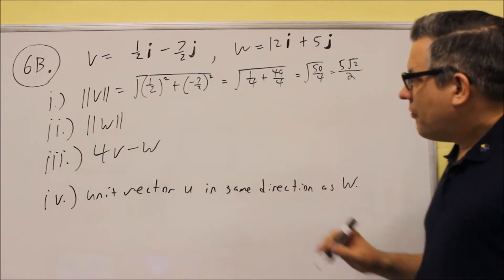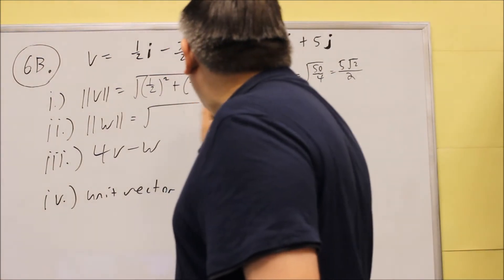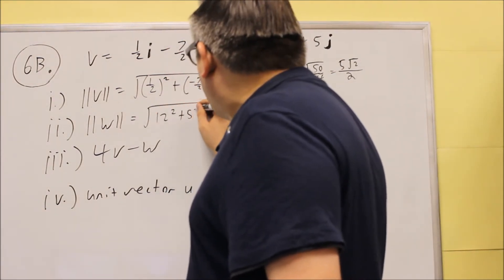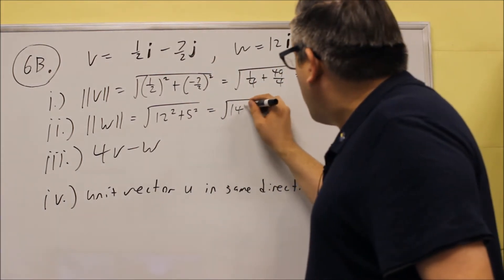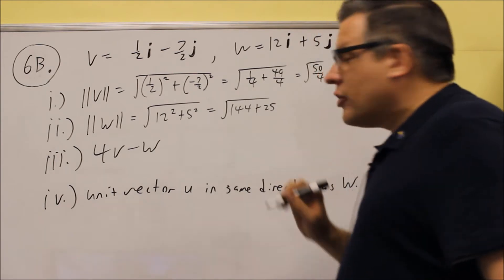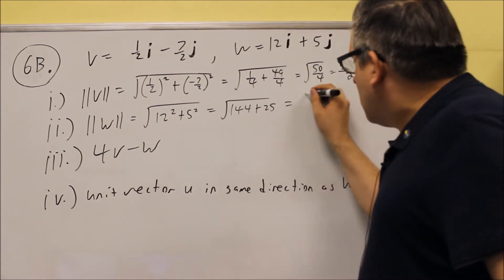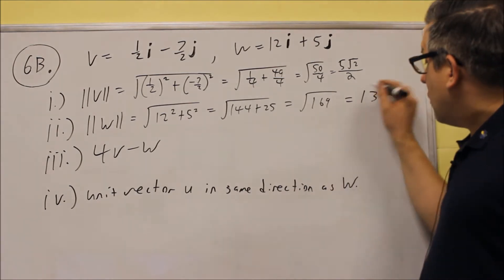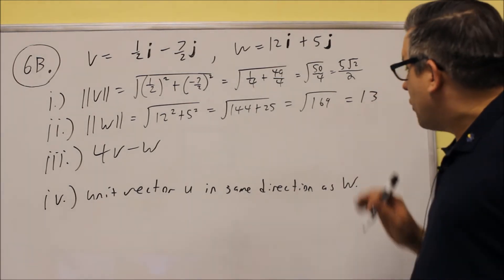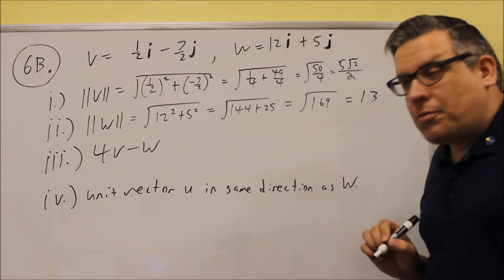For the W, we have the square root of 12 squared plus 5 squared, which is the square root of 144 plus 25. We square both of those separately, the square root of 169, and that's going to give you just 13. So we get a whole number on this, no square roots necessary on that one.